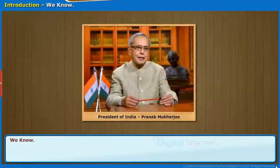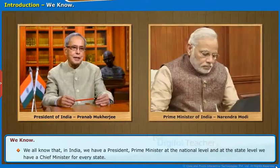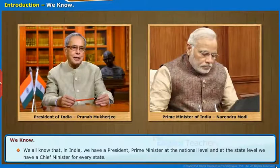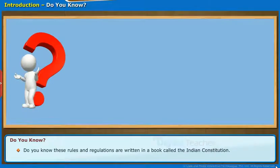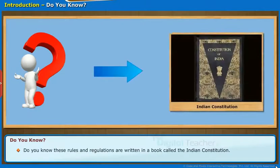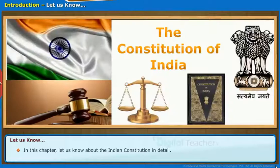We will first start with the introduction. We all know that in India, we have a president and prime minister at the national level, and at the state level, we have a chief minister for every state. We also know that they provide their services to the people by following specific rules and regulations. These rules and regulations are written in a book called the Indian Constitution. In this chapter, let us know about the Indian Constitution in detail.